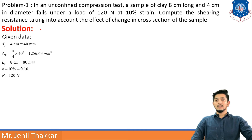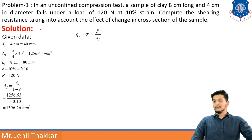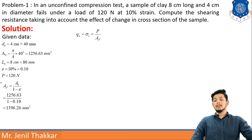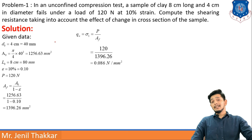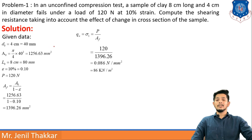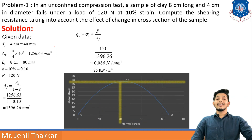From the unconfined compression test formula: qu = σ1 = P / Af. We already know P = 120 N. For Af we use: Af = A0 / (1 − ε) = 1256.63 / (1 − 0.10), giving Af = 1396.26 mm². Now: σ1 = 120 / 1396.26 = 0.086 N/mm², which is approximately equal to 86 kN/m².